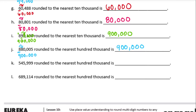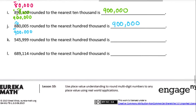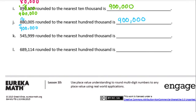Five hundred forty-five thousand, nine hundred ninety-nine rounded to the nearest hundred thousand. The hundred thousands place is the five. Next to it is a four — that's four or lower — so the five stays the same and everything else turns into zeros. Rounded to the nearest hundred thousand, that's five hundred thousand.